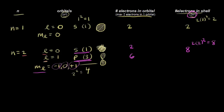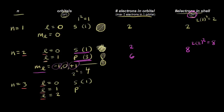Let's go to the third energy level, or the third shell, where n is equal to three. The allowed values for l go from zero up to n minus one, so l equals zero, one, and two, since three minus one equals two — giving three possible values for l. l is equal to zero is an s orbital, and l is equal to one is a p orbital, which with three allowed values for the magnetic quantum number gives three p orbitals in the third energy level.